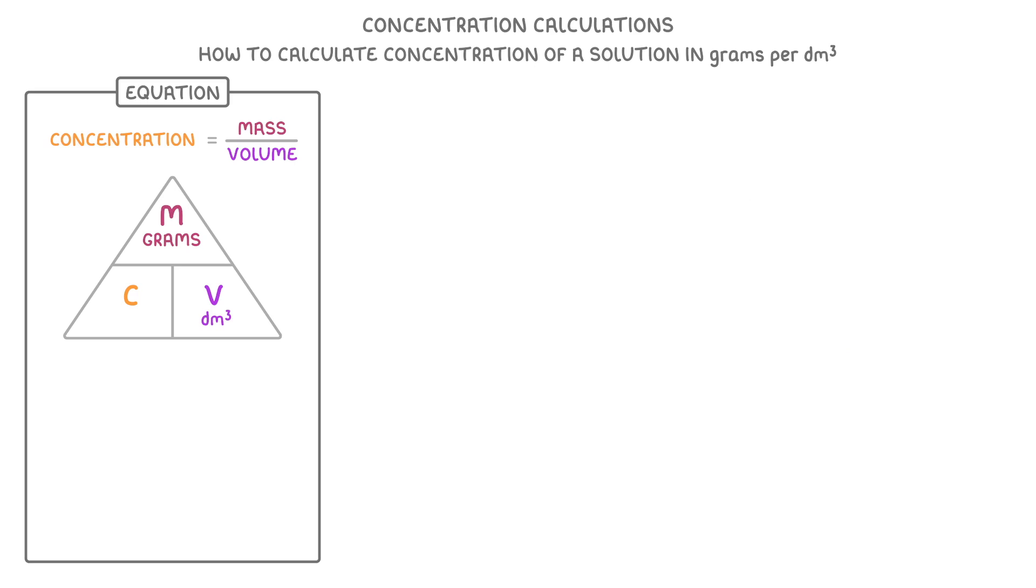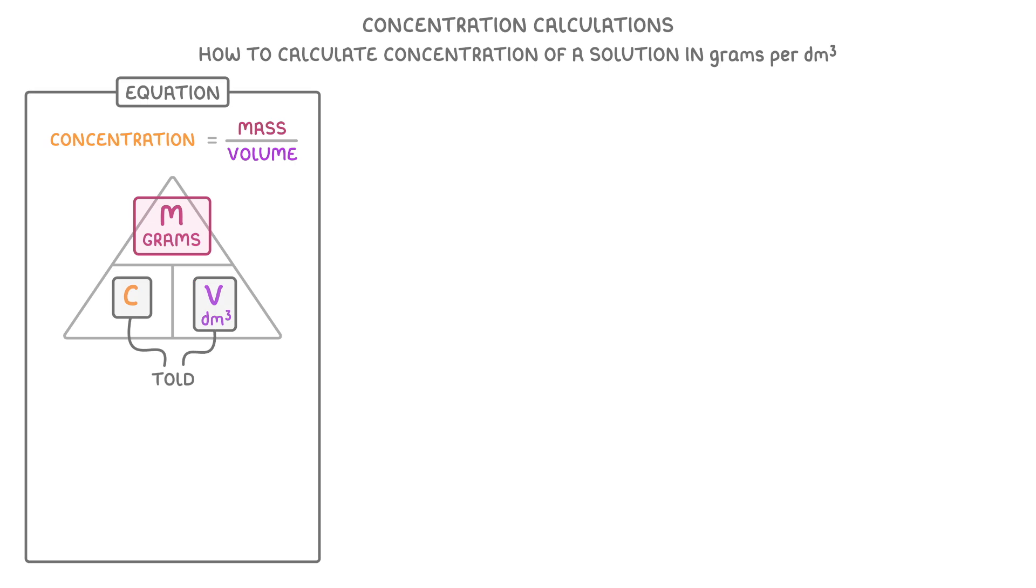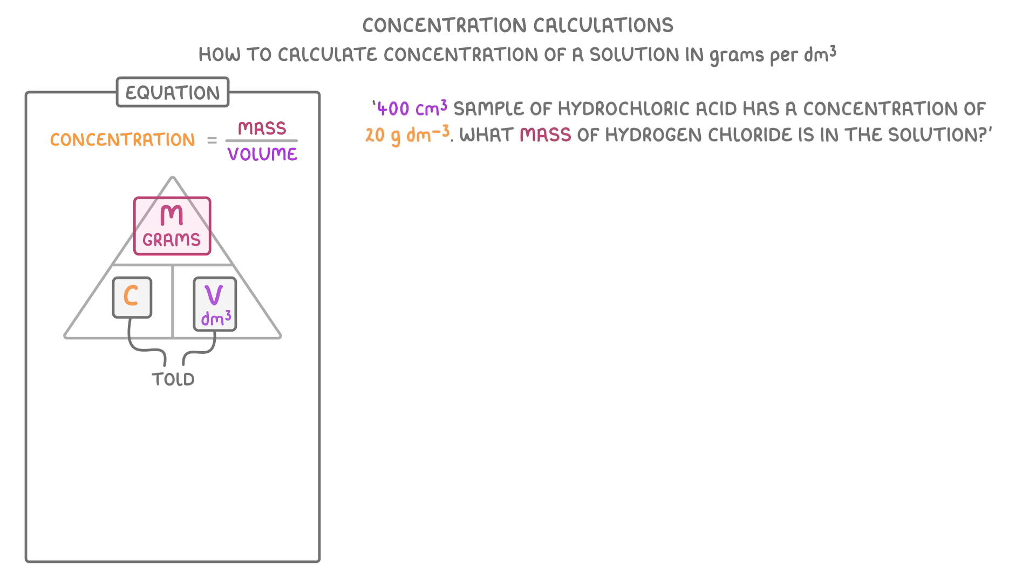Now we said at the beginning that we can also use this equation to work out the mass if we're told the concentration and volume. For example, a 400 centimetres cubed sample of hydrochloric acid has a concentration of 20 grams per decimetre cubed. What mass of hydrogen chloride is in this solution?